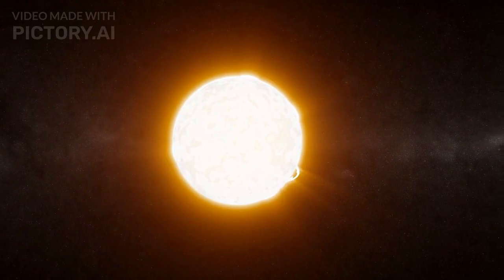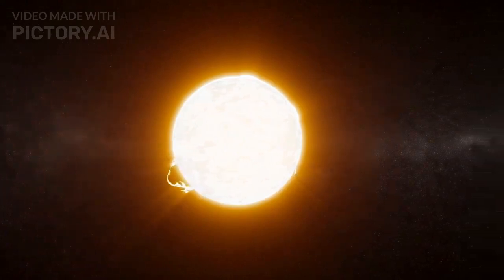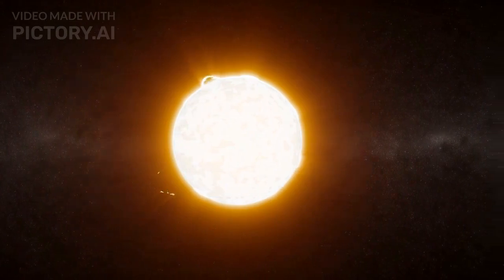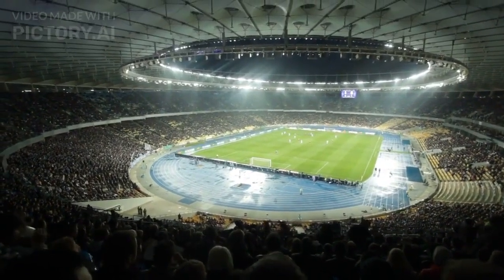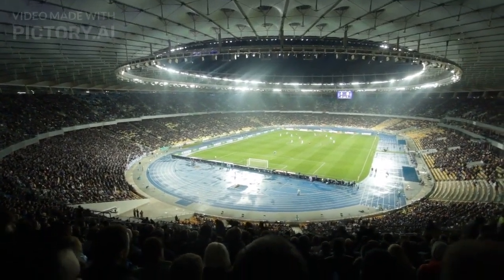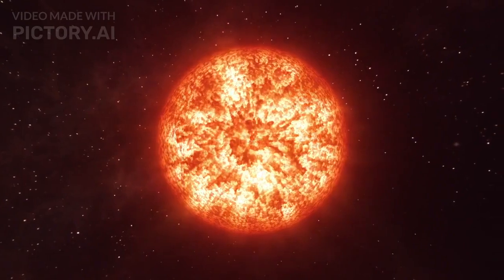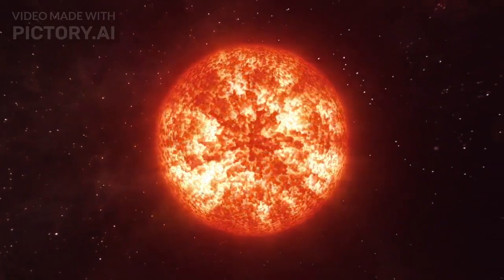To put its size into perspective, imagine shrinking the Sun down to the size of a basketball. On this scale, Betelgeuse would be a colossal sphere spanning the length of a football field. This comparison helps us grasp just how massive Betelgeuse truly is.